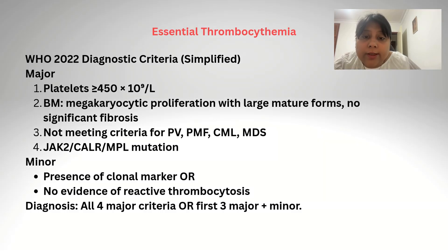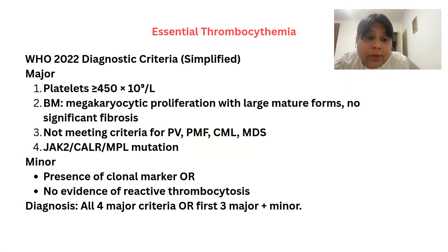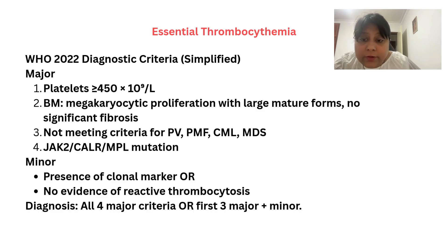Here you can see the WHO 2022 diagnostic criteria for essential thrombocytemia. The major criteria include: platelet count more than 450 × 10⁹ per litre; bone marrow showing megakaryocytic proliferation with large mature forms and no significant fibrosis; not meeting the criteria for polycythemia vera, primary myelofibrosis, CML, or myelodysplastic syndrome; and presence of JAK2, CALR, or MPL mutation. The minor criteria include presence of a clonal marker or no evidence of reactive thrombocytosis. For diagnosis, all four major criteria should be met, or the first three major plus the minor criterion.